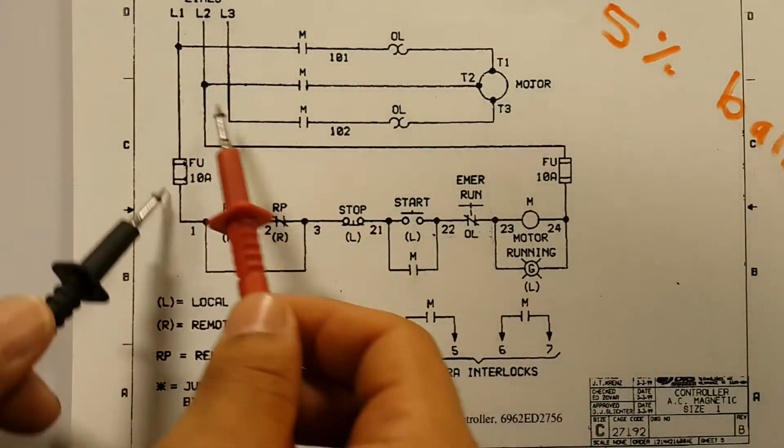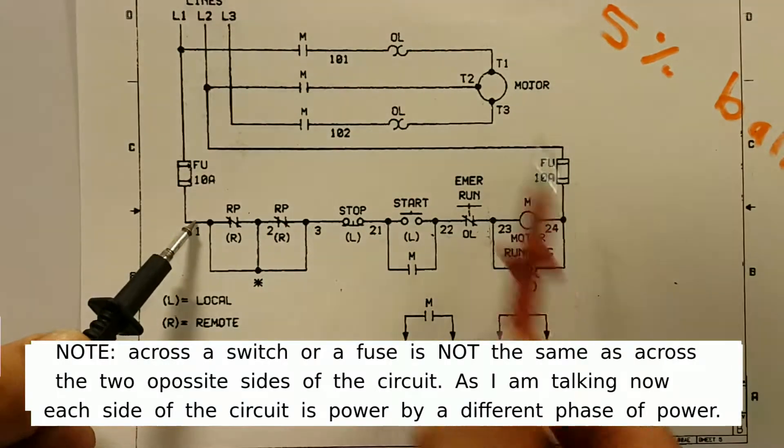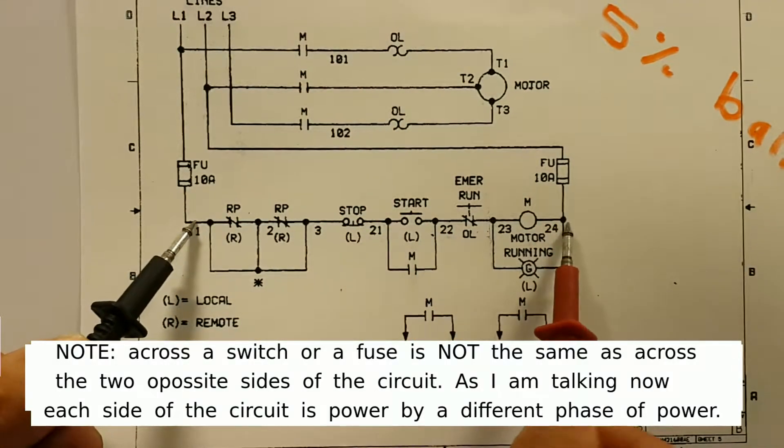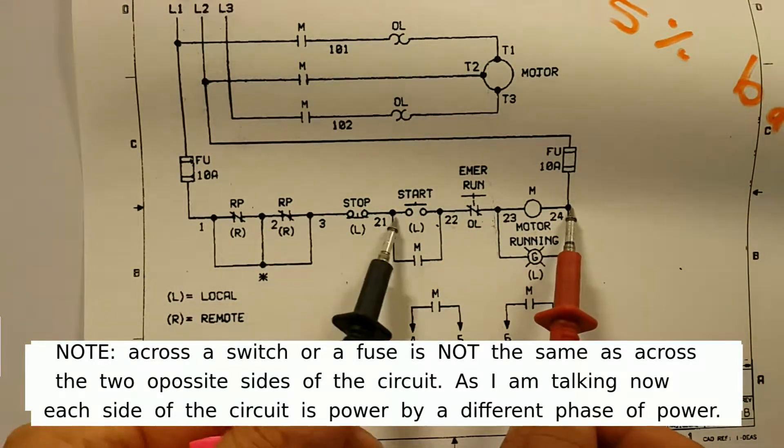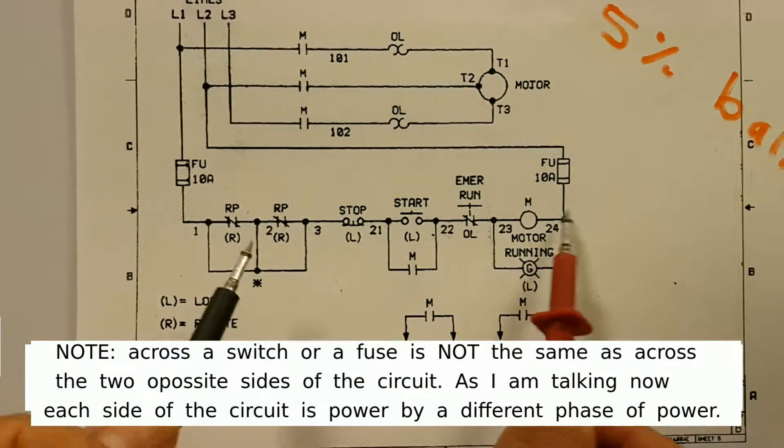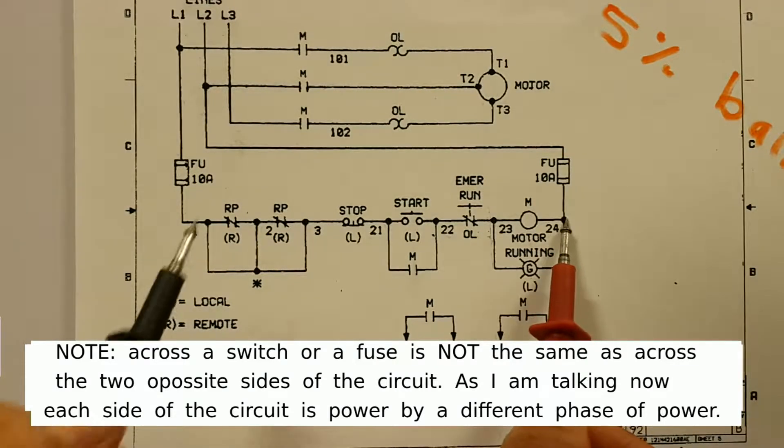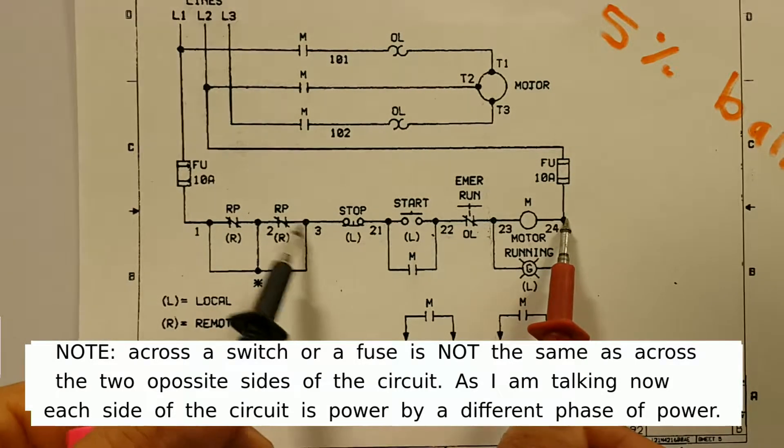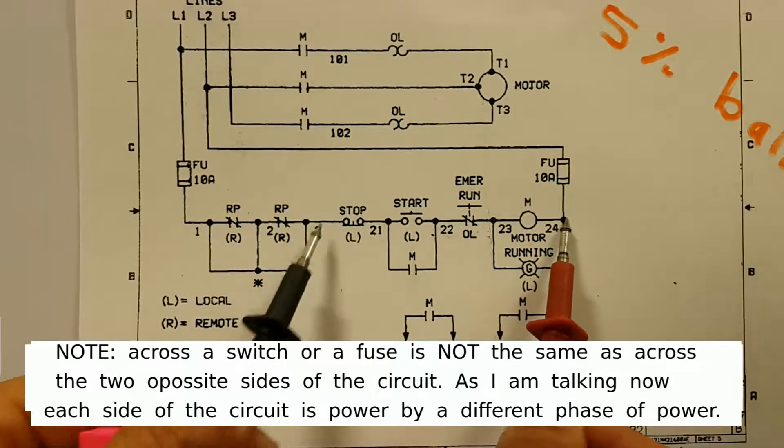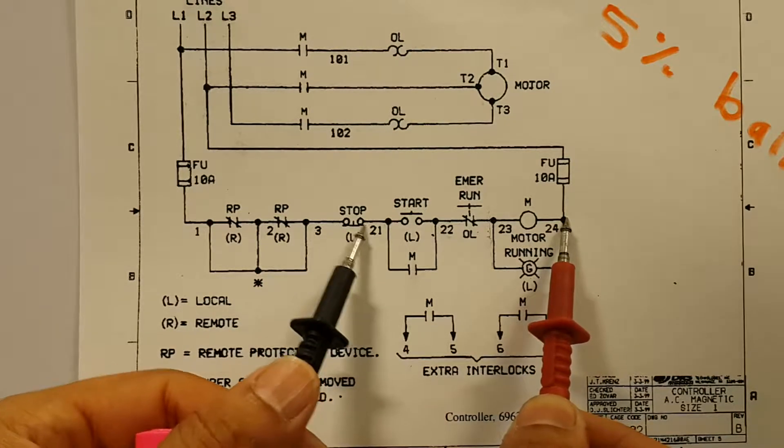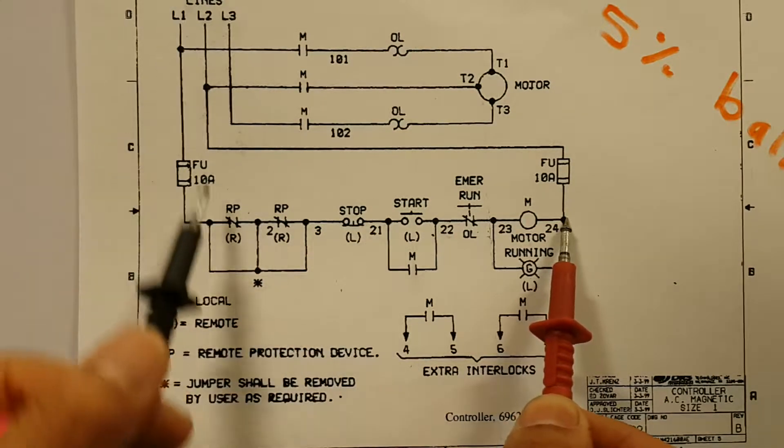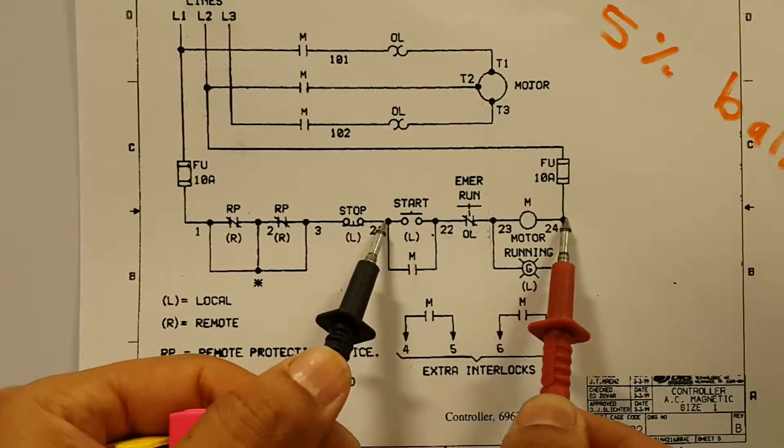If I do a cross between this point and this point, now I will be reading L1 here potential and L2 potential over here, so I will get 440. Now all of this is just a straight piece of wire up to this point. If the stop button is good to go or it's not faulty, then I should also have L1 potential all the way up to here.